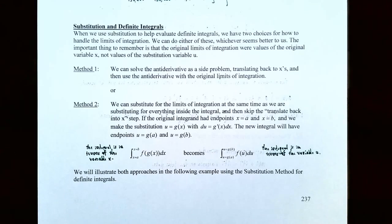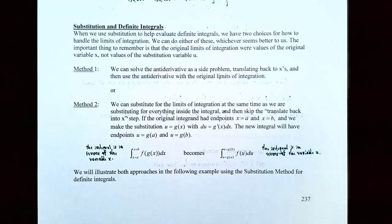Sometimes we want to use the substitution rule because we want to evaluate a definite integral that has a composite function for an integrand. We want to be able to reverse the chain rule using the substitution rule, but we also want to evaluate the area under the curve for that composite function, so we have to evaluate a definite integral. It turns out there are two different choices for how we can handle limits of integration when using the substitution rule, and we can do either one.